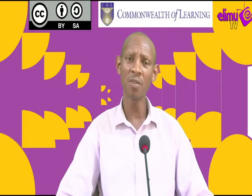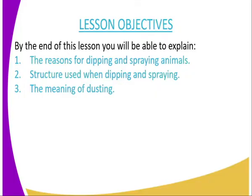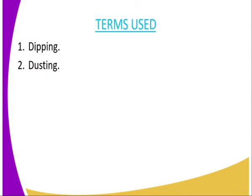The lesson objectives: by the end of this lesson, you will be able to explain the reasons for dipping and spraying animals. Number two, explain the structures used when dipping and spraying. And finally, explain the meaning of dusting as it is done in poultry.